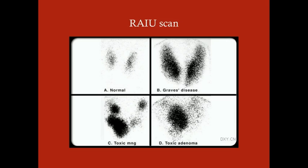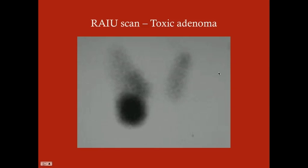If it's a younger woman without a nodule, the best next step would be thyroid stimulating immunoglobulin, because it doesn't subject the patient to nuclear medicine and Graves' disease is more likely. Here's a toxic adenoma on scan—you've got normal uptake in one area and super high uptake in the nodule.